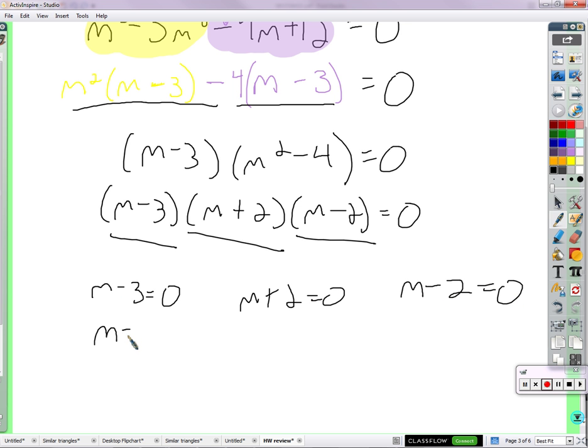Add 3 on both sides, you get m is 3. Subtract 2 on both sides, you get m is negative 2. Add 2 on both sides, you get m is 2.